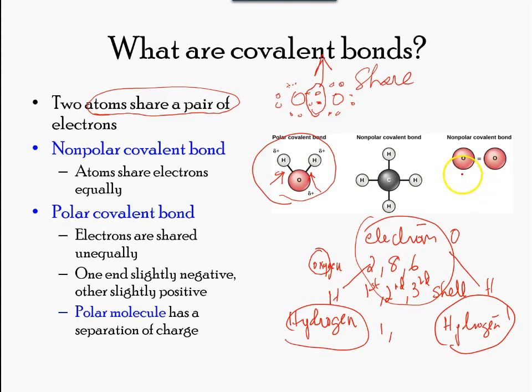In a polar covalent bond, the electrons shared by the atoms spend more time closer to one nucleus than to the other nucleus. Because of the unequal distribution of electrons between different nuclei, a slightly positive or slightly negative charge develops. The covalent bonds between hydrogen and oxygen atoms in water are polar covalent bonds. The shared electrons spend more time near the nucleus of the oxygen, giving it a small negative charge, than they spend near the hydrogen nuclei, giving these molecules a small positive charge.